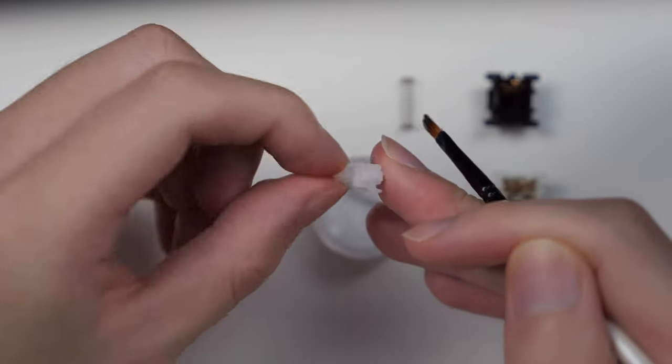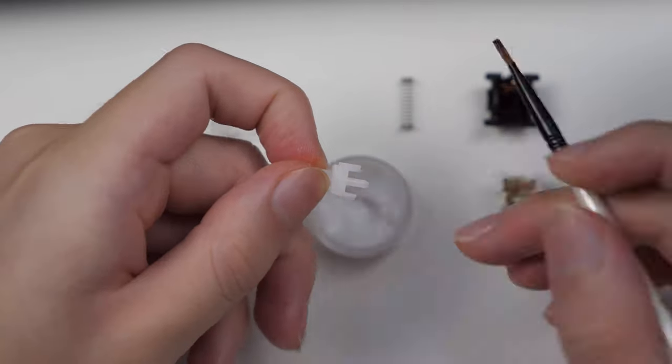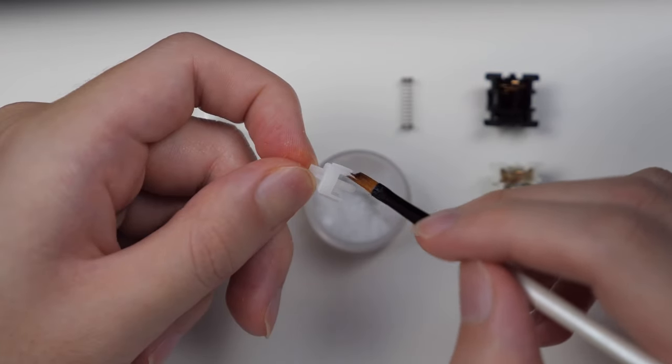Do this with the entirety of the stem, creating thin layers of lube carefully and meticulously. Make sure to lube the feet of the stem on the bottom as well.